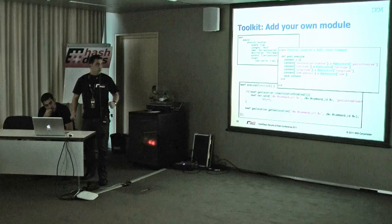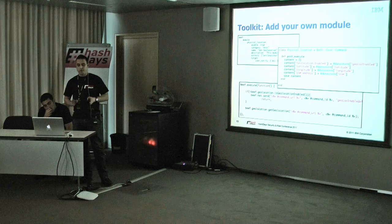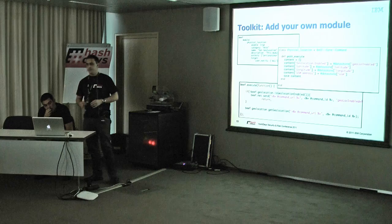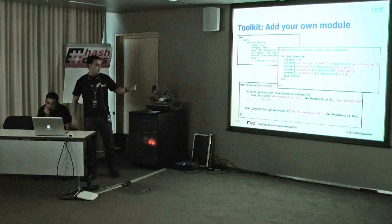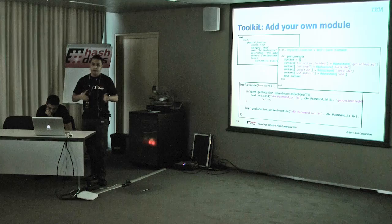Each module has three files. The first is a config file in which we set the name, the category, and the configuration for that module, including which browsers it runs in. The second is a Ruby file where we define the parameters for that module - it's important because the core server needs that file to run. The last file is the JavaScript code, which can use all the features of HTML5. It's the code that runs in the victim's browser - that's the important part.